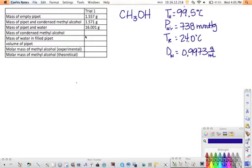Using the data, fill in the rest of the table. Calculate the molar mass of methyl alcohol using equation three from your pre-lab reading and compare this value to the actual molar mass of methyl alcohol, which we can calculate pretty easily using the periodic table.